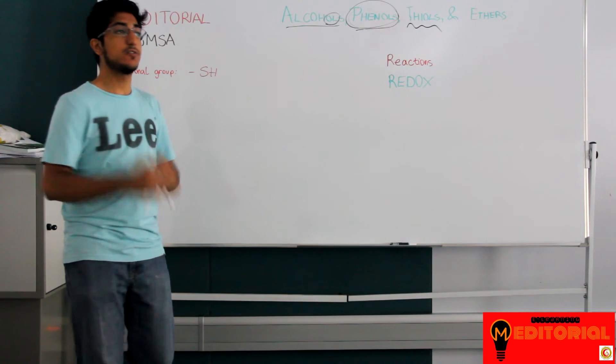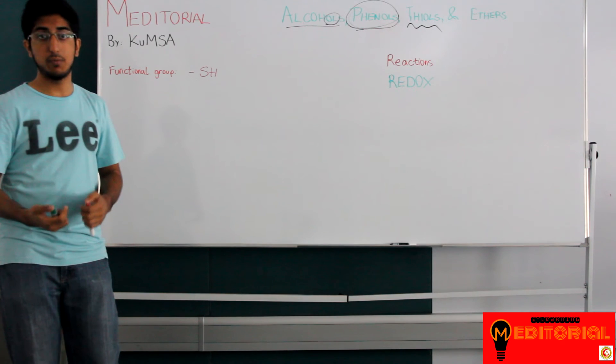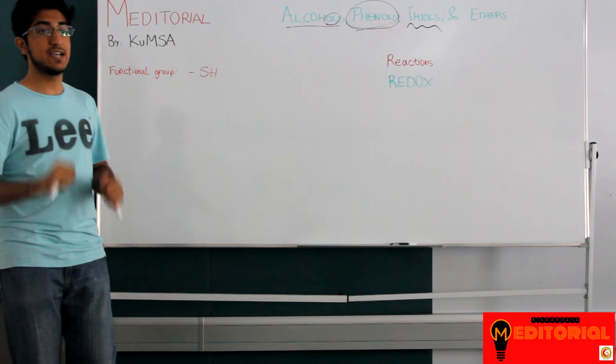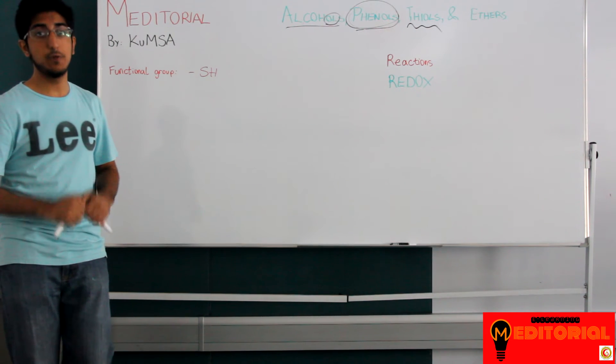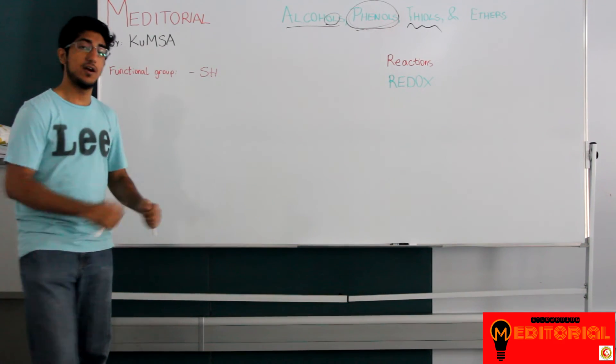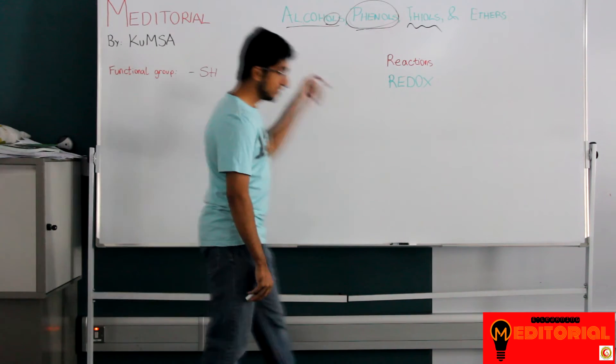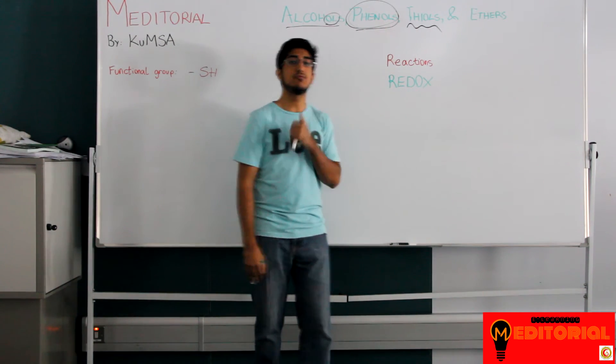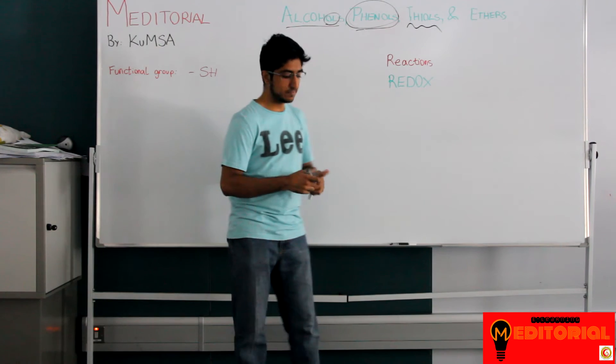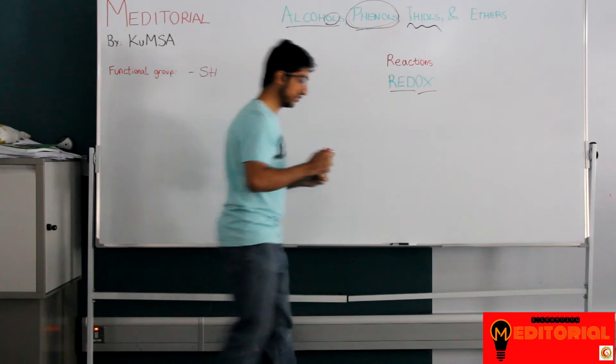But it's very important to study thiols because we have a thiol group in a very important amino acid called cysteine. Cysteine is an amino acid. It helps make proteins and it's important for life. And that's because it's the only amino acid that has a cysteine group allowing it to form disulfide bridges. What are disulfide bridges? I'll show you in a bit. Disulfide bridges are formed because of redox reactions. And as many of you already know, the red means reduction and the ox means oxidation.